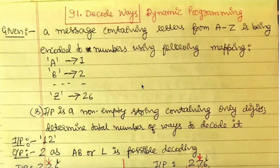Welcome to a new question in the series 'Algorithms Made Simple.' In this video, I will talk about LeetCode number 91, which is Decode Ways. This is also a dynamic programming question.